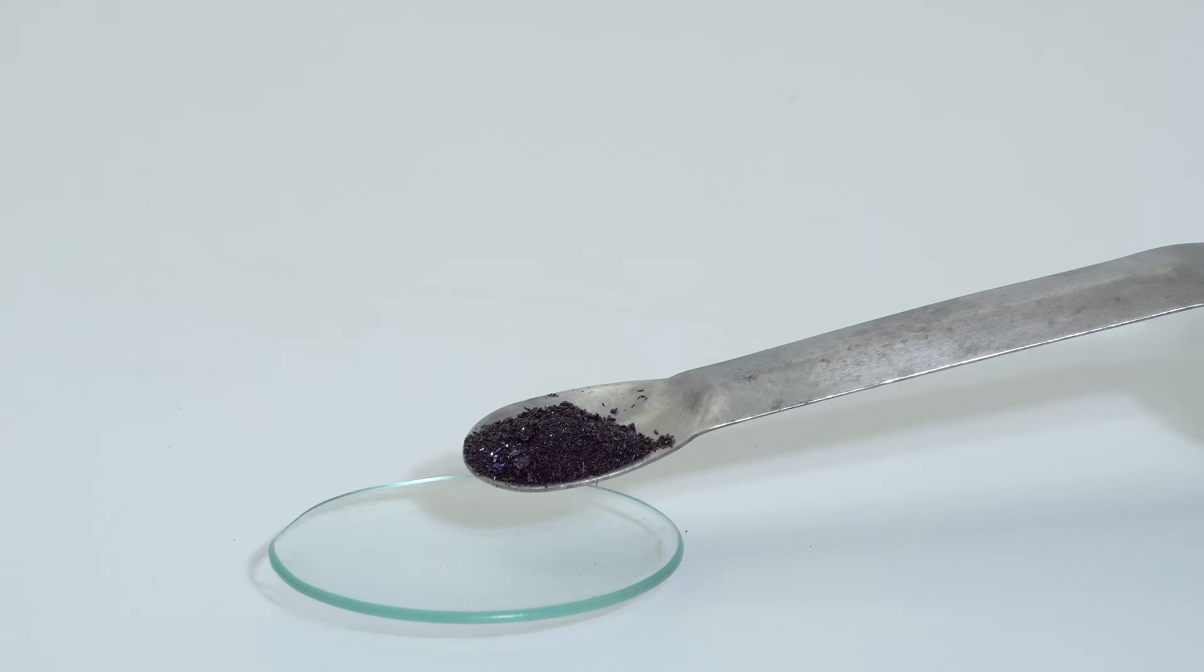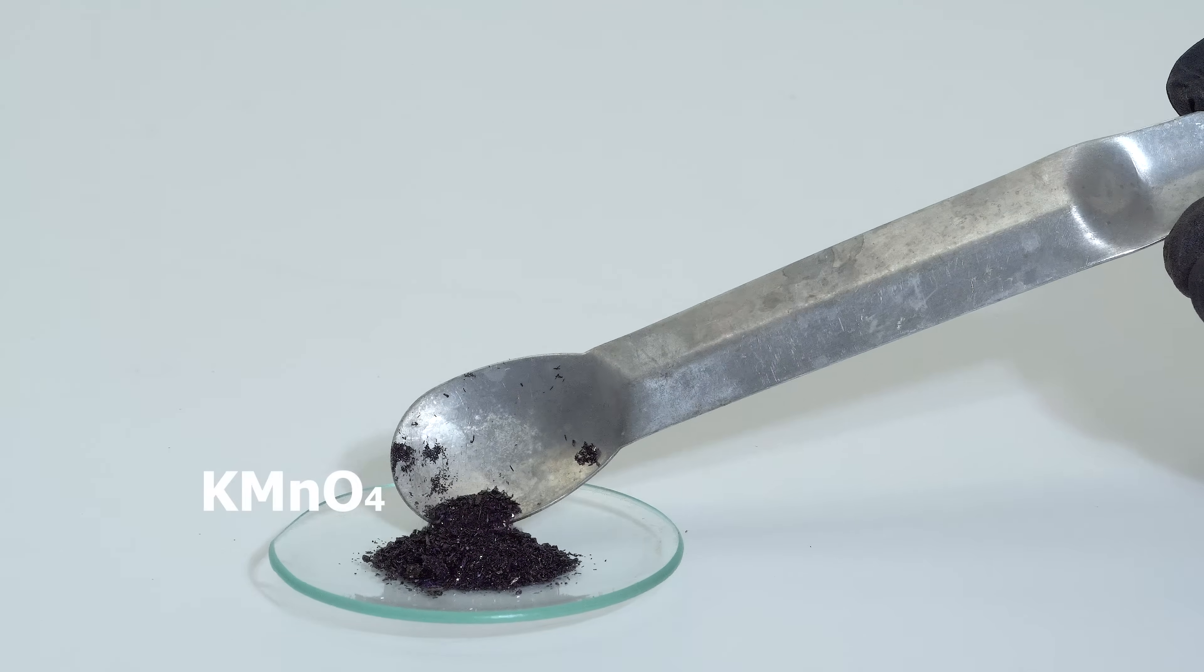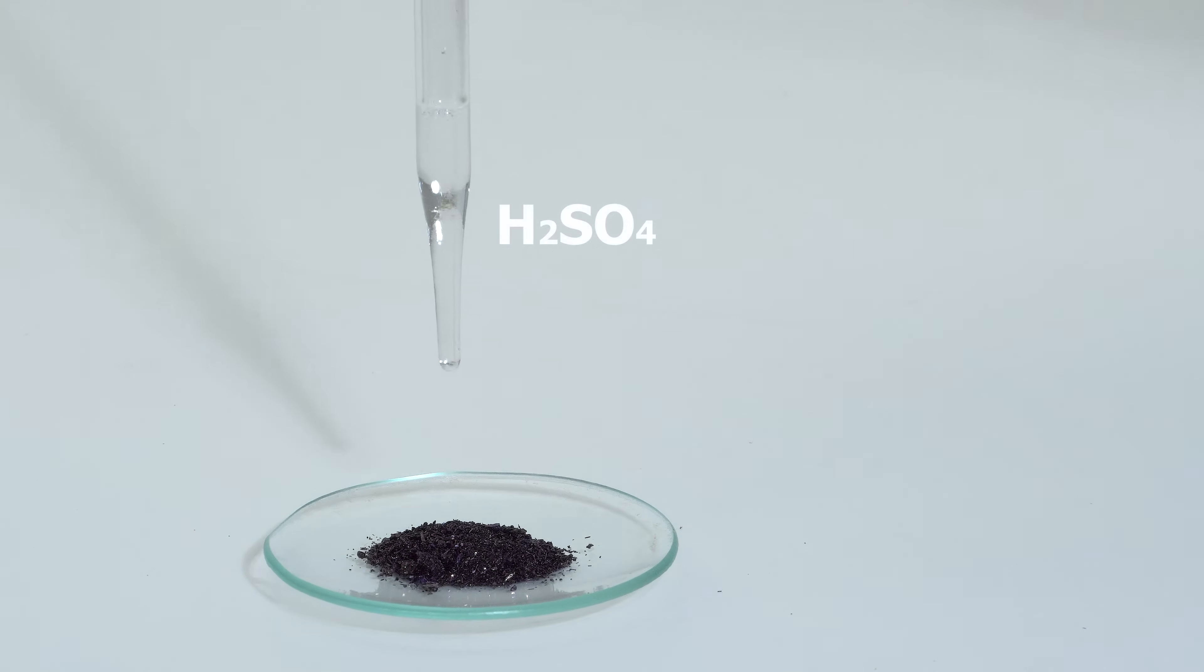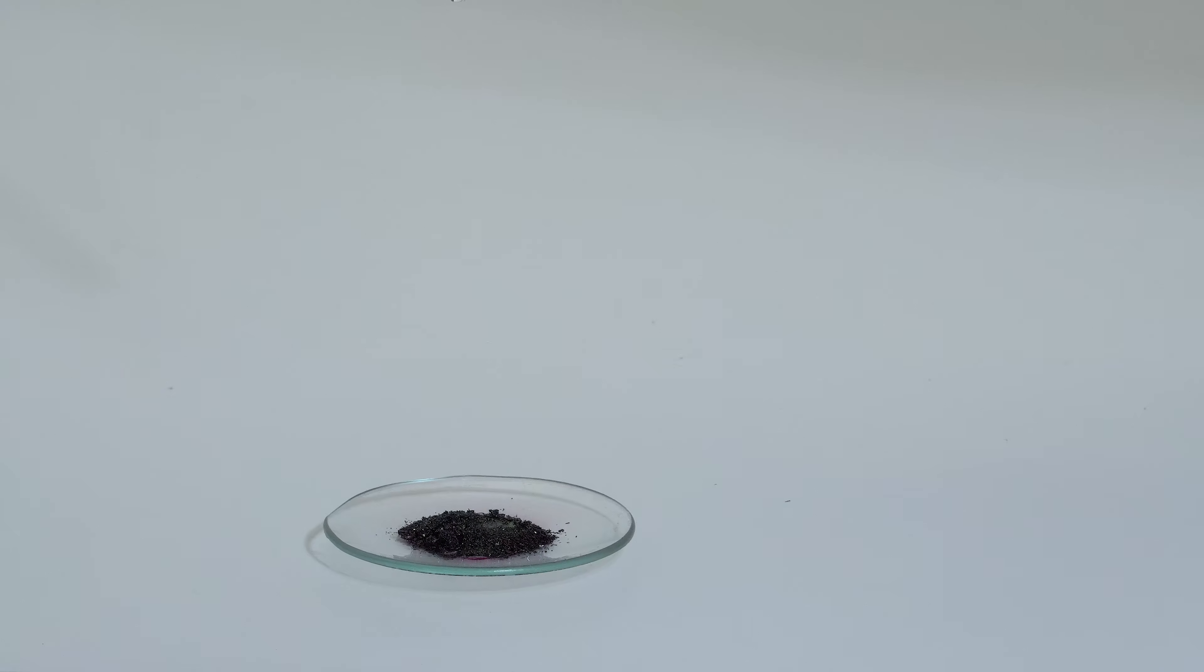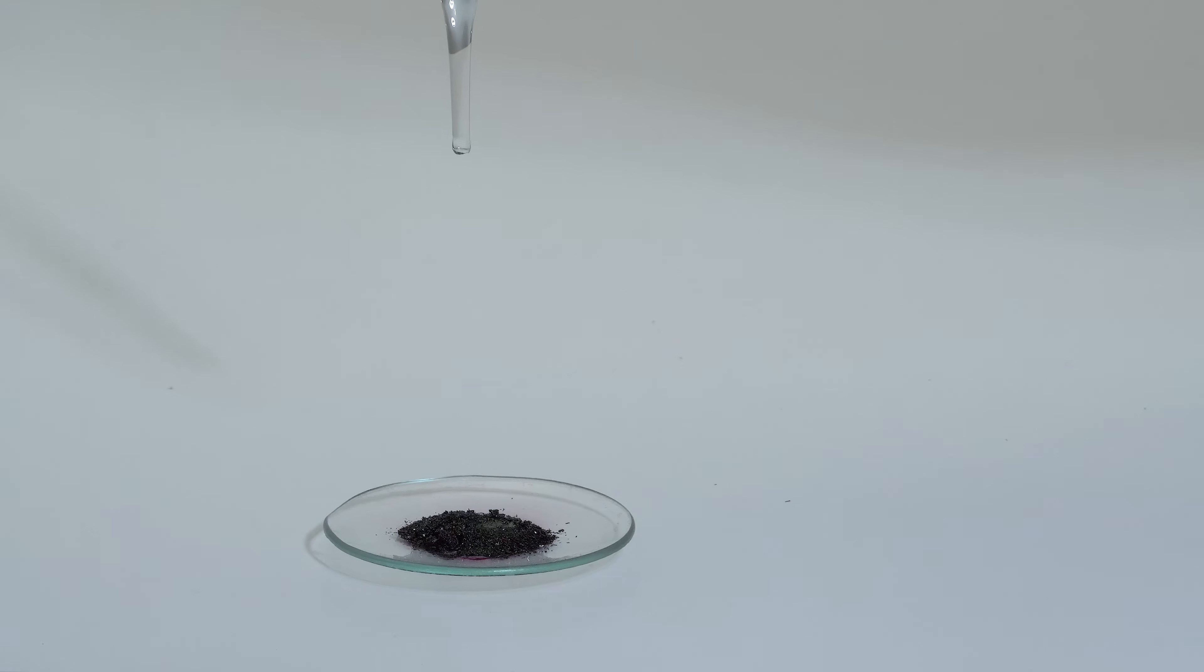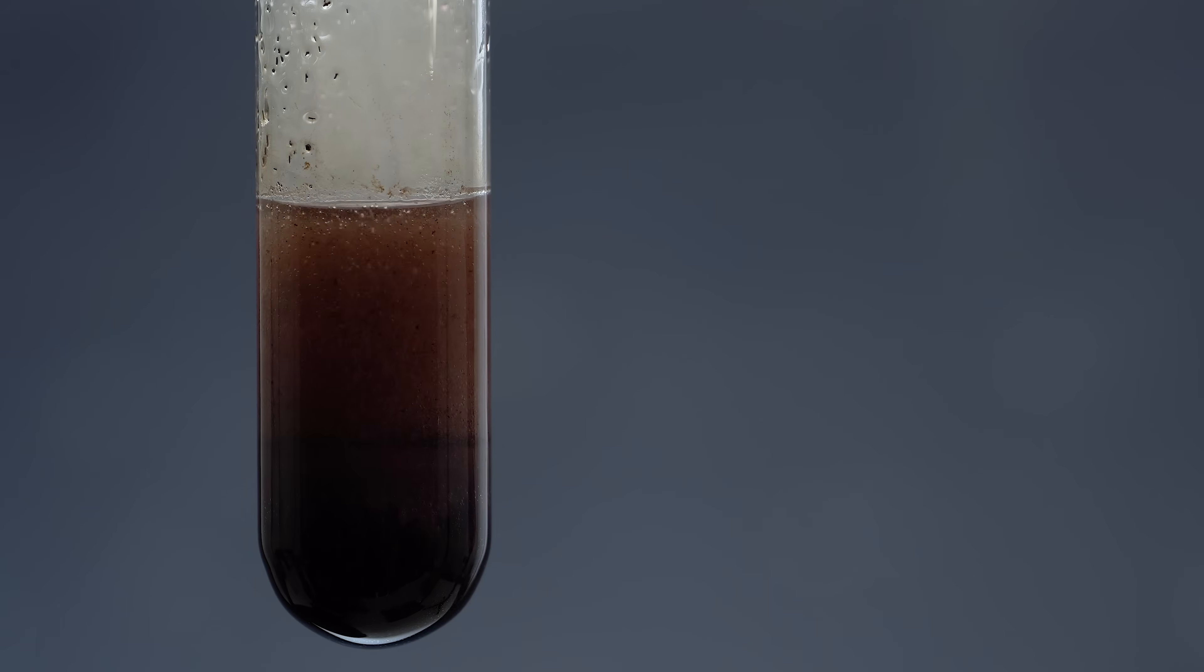The point of this experiment is that the reaction between concentrated sulfuric acid and potassium permanganate produce manganese heptoxide, which is an extremely strong and unstable oxidizer that inflames ethanol on contact with it.